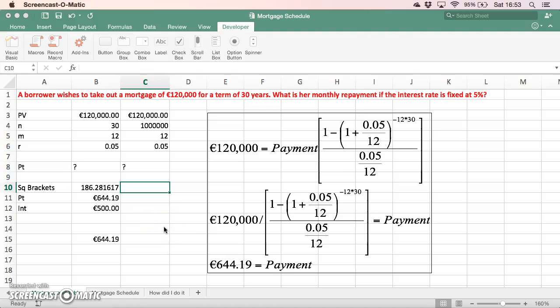Let's take the following example. We're interested in finding out the repayments on a mortgage. In this case, we could imagine somebody borrows €120,000 to buy an apartment or a small house for a period of 30 years, and the monthly repayment is what we want to find out. What is our monthly repayment if the interest rate is 5%?